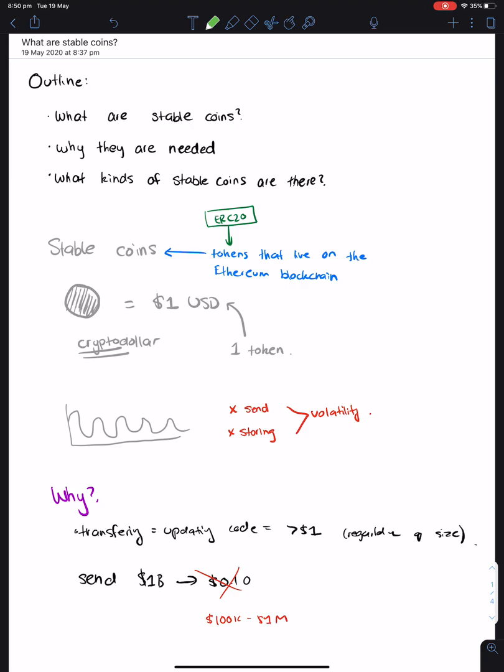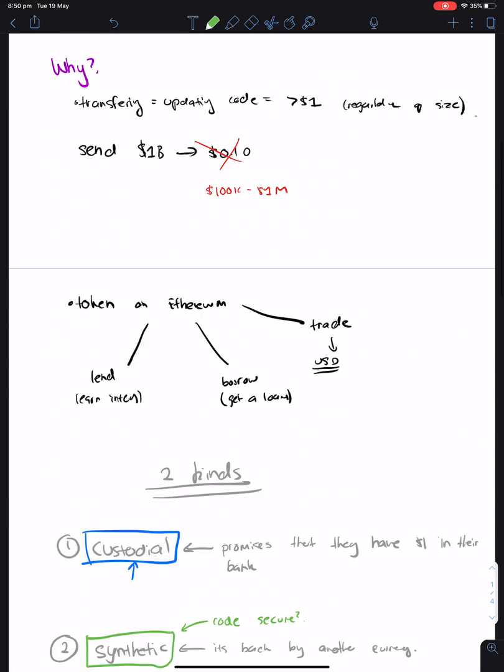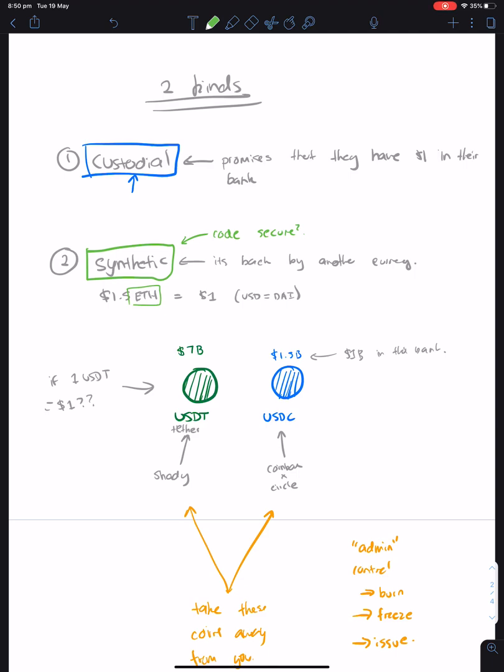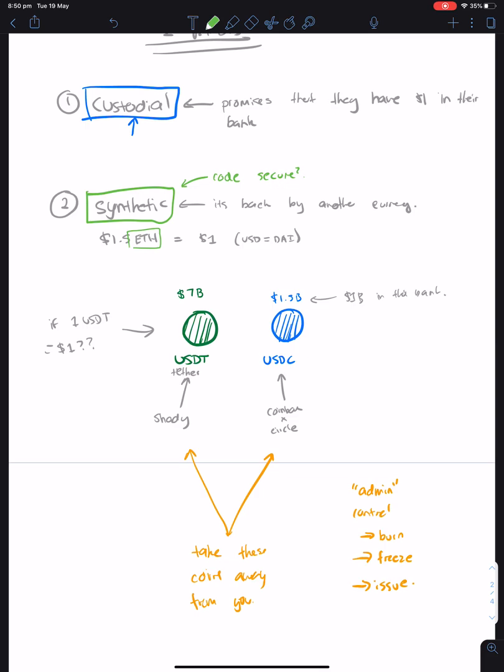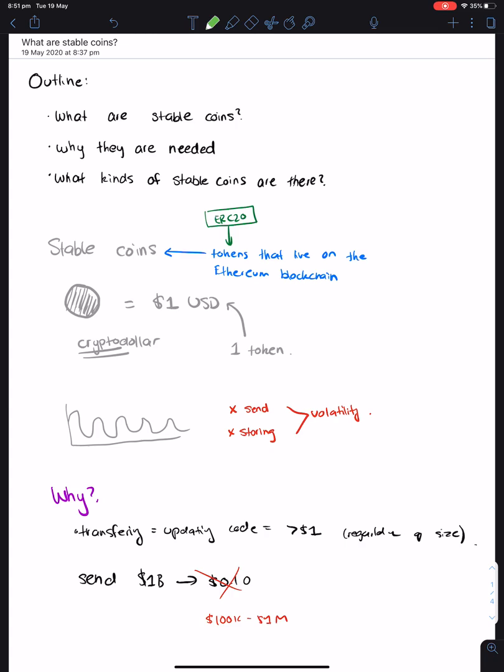To summarize: a stablecoin is a representation of one US dollar on the blockchain. Why are they needed? They let us transfer very large or small amounts of value to anyone, anywhere, anytime for very low cost. What kinds are there? You've got custodial and synthetics. Custodials are very popular with billions of dollars in liquidity, but the downside is you're at the mercy of another party. Then you have synthetic stablecoins, about a hundred million dollars in liquidity, so much smaller, and no one necessarily controls them. But the question is: is the code safe enough? Will the mechanism which binds one and a half dollars worth of ETH to a dollar always hold true? That's about it - hope you guys enjoyed this video about stablecoins.